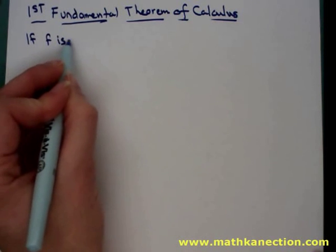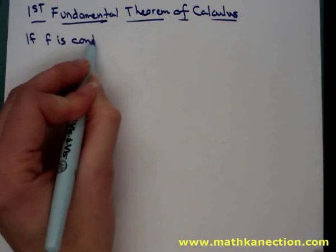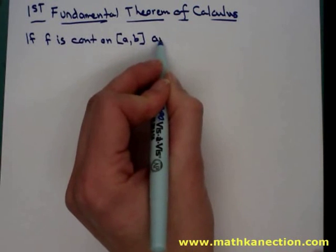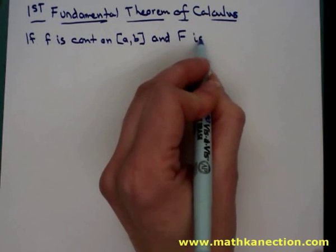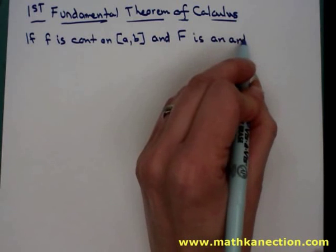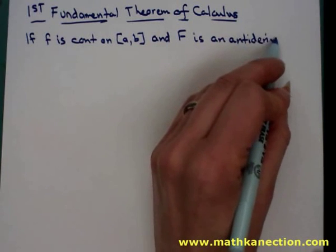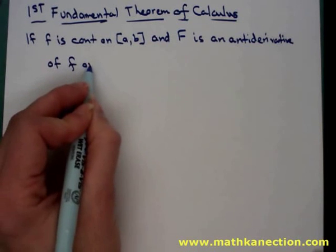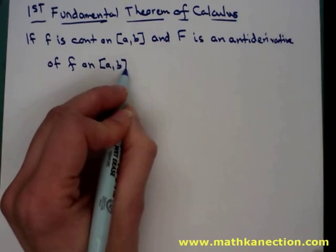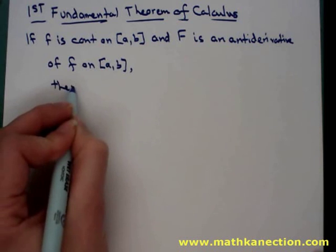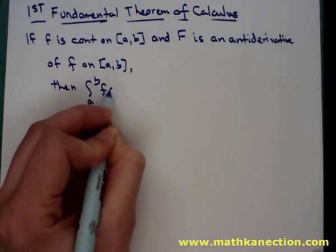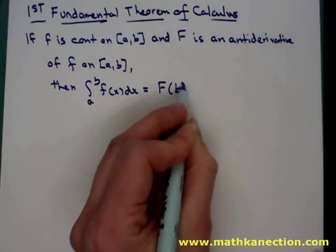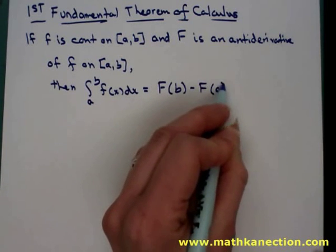We're taking notes on the first fundamental theorem of calculus. If f is continuous on the closed interval from a to b, and capital F is an antiderivative of little f on that interval from a to b, then the first fundamental theorem of calculus states that the integral from a to b of f(x) dx is equal to the antiderivative substituting in b, subtract the antiderivative substituting in a.